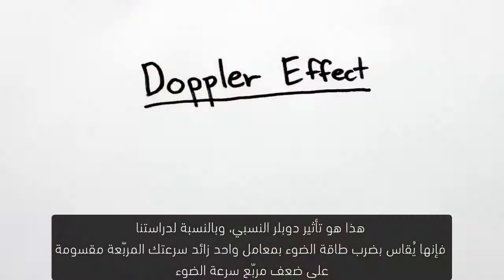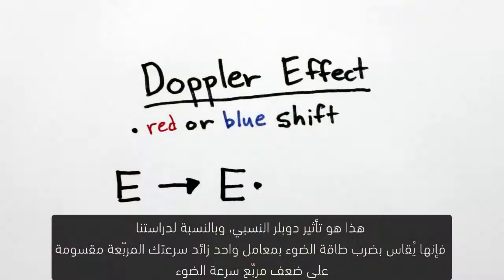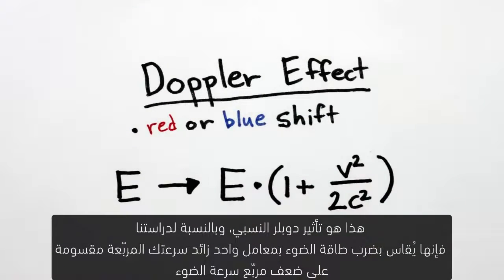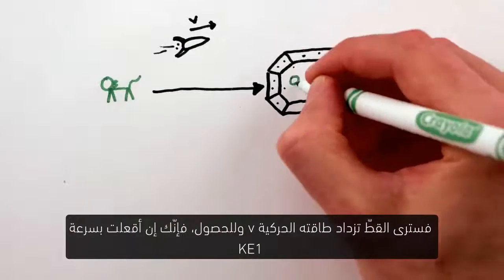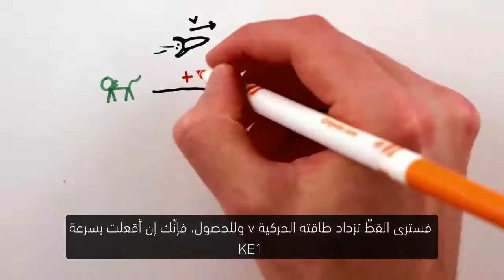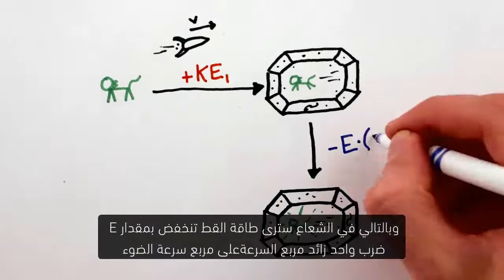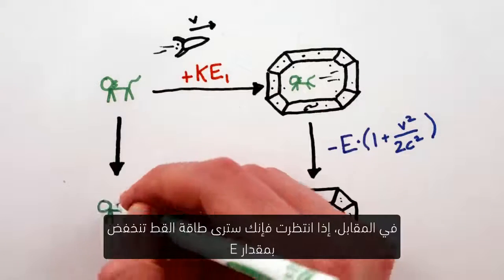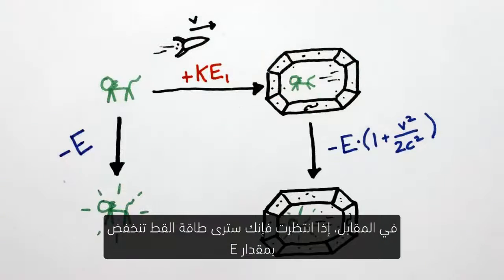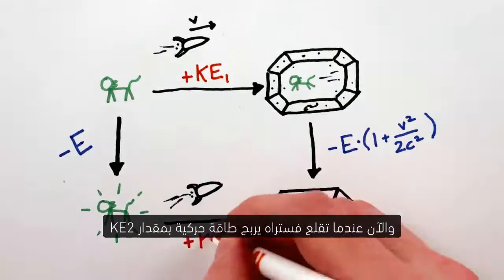This is the relativistic Doppler effect, and for our purposes it amounts to multiplying the energy of the light by one plus your velocity squared divided by twice the speed of light squared. So to recap: if you take off at velocity V, you'll see the cat gain some kinetic energy Ke1, then at the flash, you'll see the cat's energy decrease by E times 1 plus V squared over 2C squared. On the other hand, if you wait, you'll see the cat's energy decrease by E, and now when you take off, you'll see it gain kinetic energy Ke2.